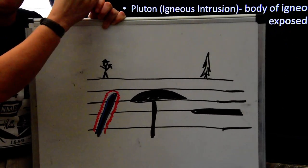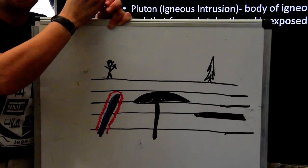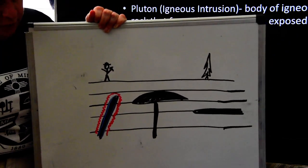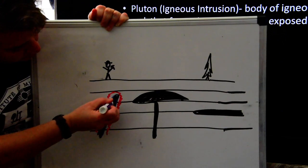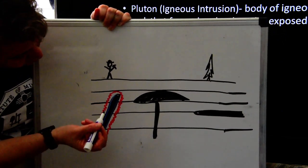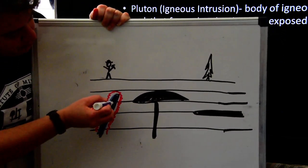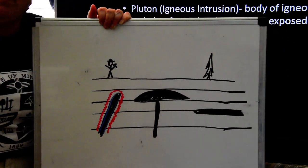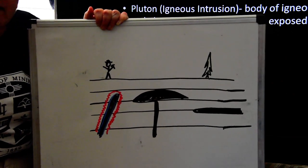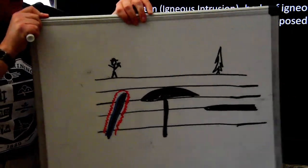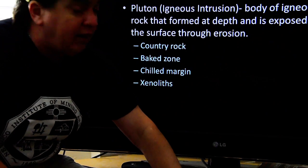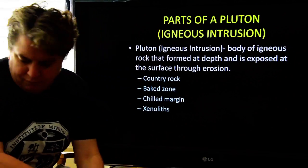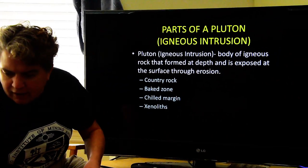Xenoliths — 'xeno' means foreign — are pieces of the country rock that get caught up and stuck inside the igneous intrusion. So a xenolith is a piece of country rock that gets jammed and trapped in that igneous intrusion.